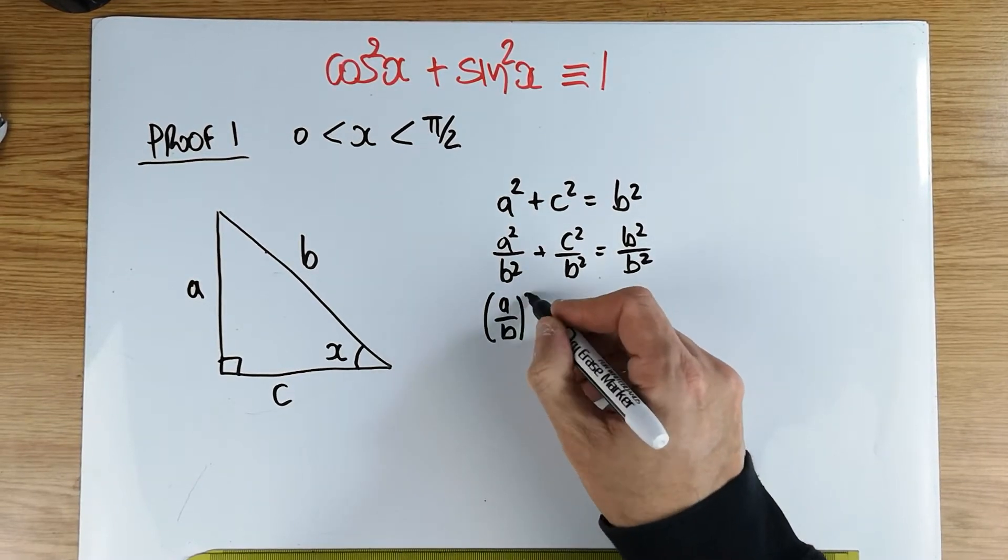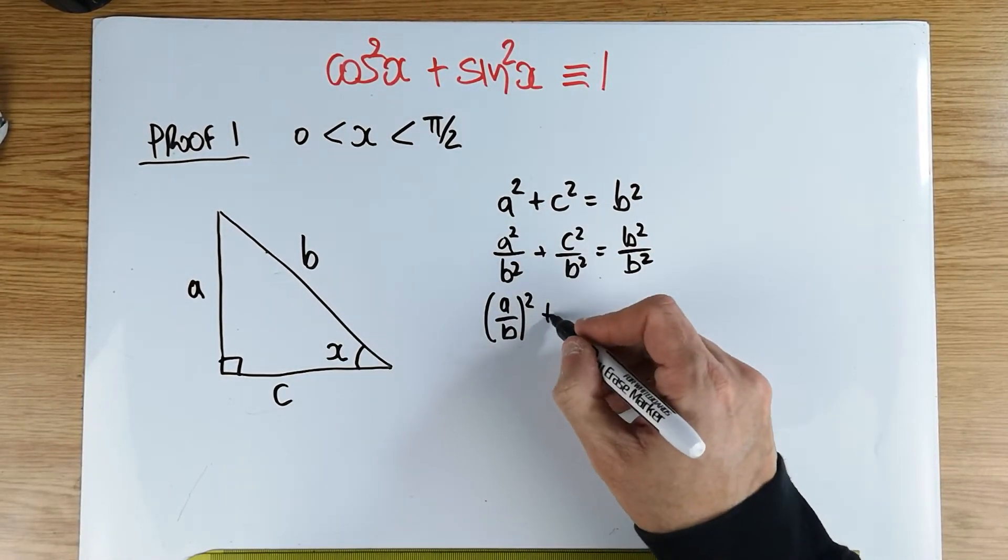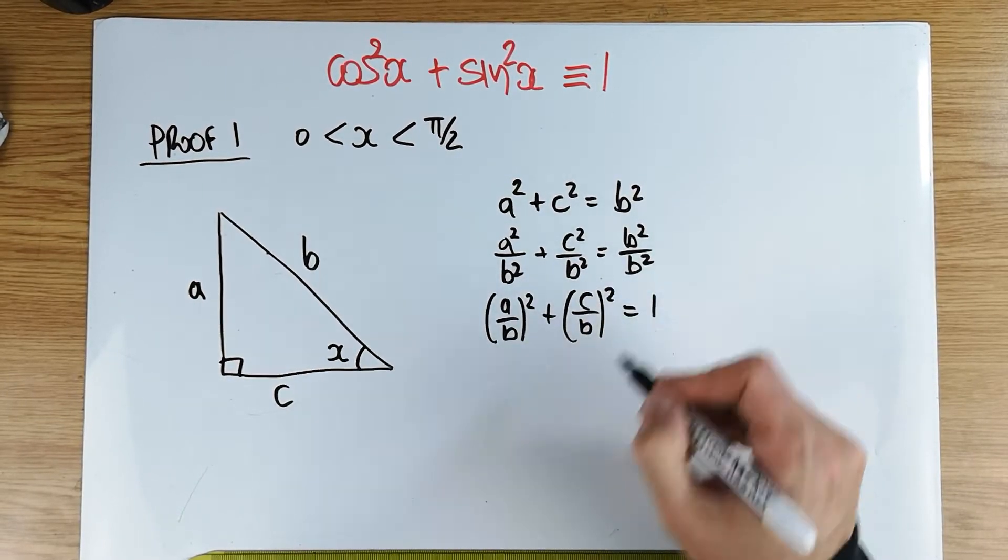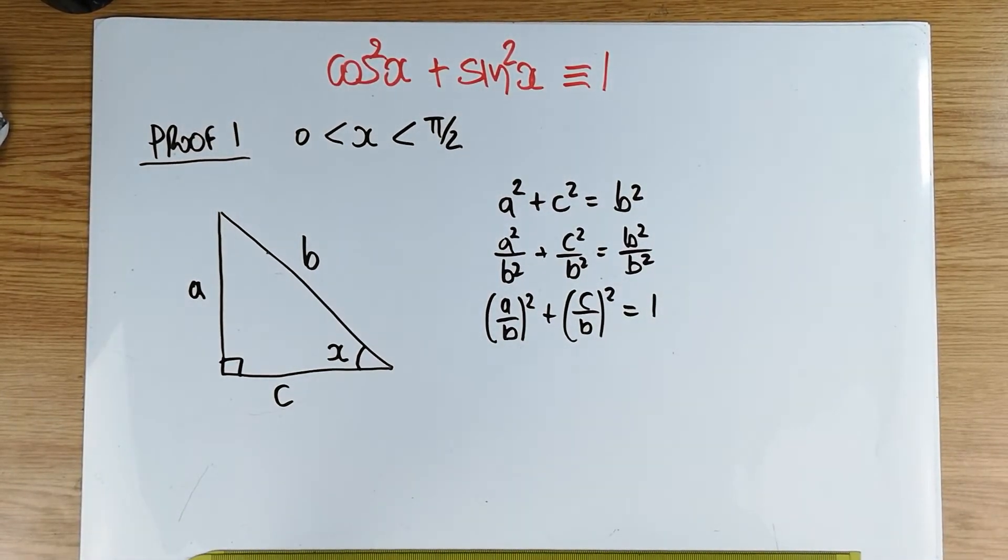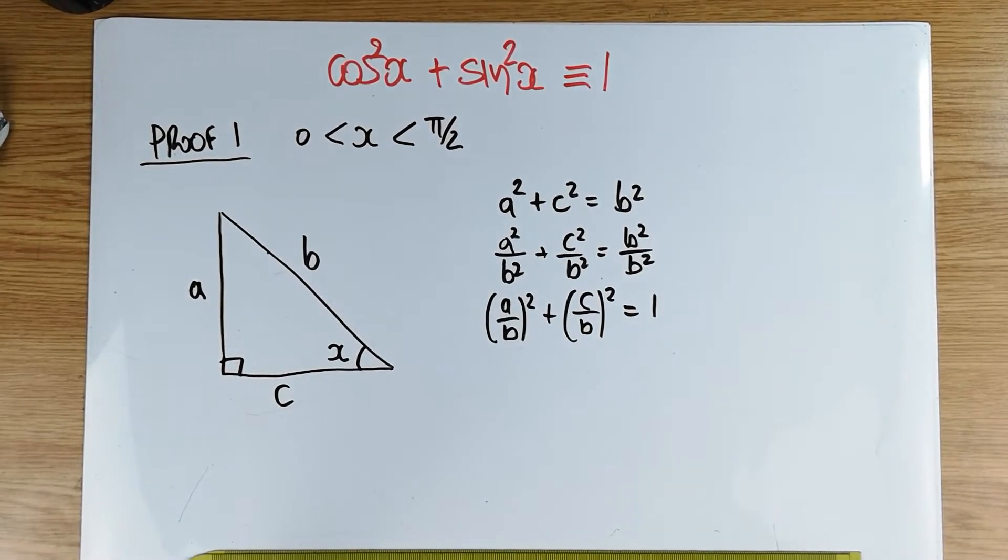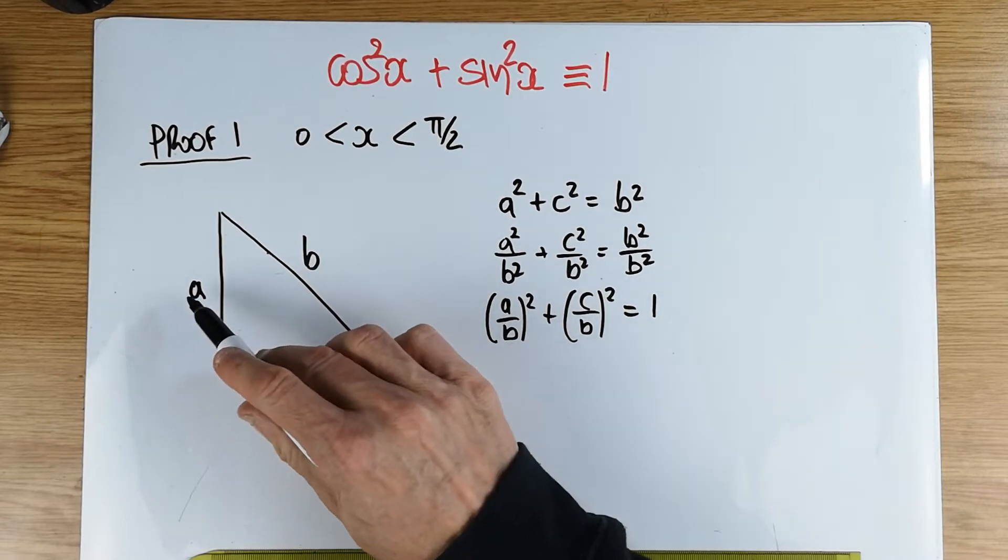So a over b all squared, that's this quantity here, plus c over b all squared is equal to 1. So if we look carefully in our particular triangle now, and see what is that a over b in this particular case, as far as this angle x is concerned,